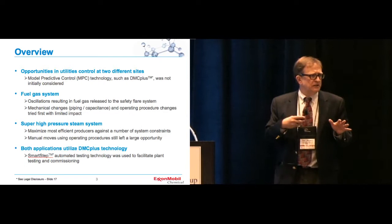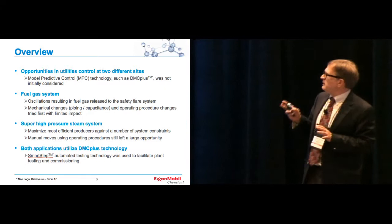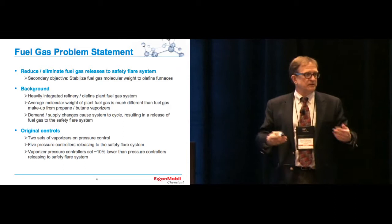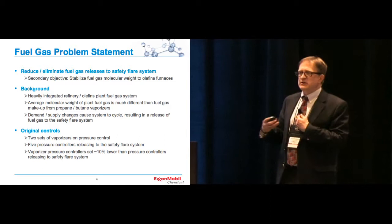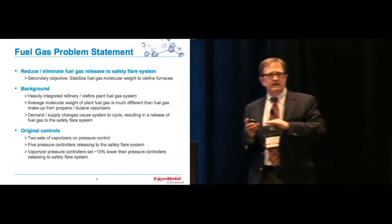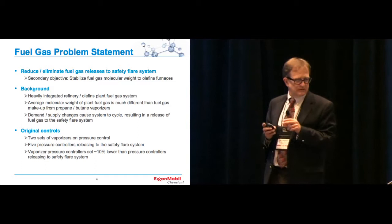Again, both the applications, we ended up using DMC Plus technology. We also see, and you'll see this in the traces that we show you, how we use SmartStep, another tool from AspenTech, to actually use to facilitate plant testing and commissioning. And the fuel gas problem, our job, again, was reduce the fuel gas releases to the safety flare system. We also had a secondary objective. The fuel gas system at this site was actually operated by the chemical side, hence the reason I was brought in. I work for ExxonMobil Chemical. So I was brought in and said, all right, what can we do to reduce the flare? And it was a huge million dollars per year loss of fuel gas to the safety flare system. The operators also said, by the way, can you line out and stabilize our molecular weight, our fuel gas composition that we're putting into our furnaces to make ethylene, the olefins plants. So those are the two objectives that we went after for this particular application.